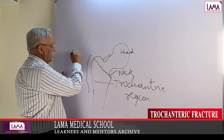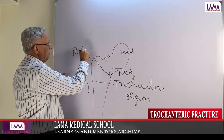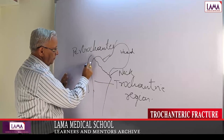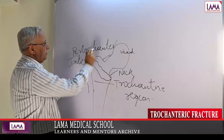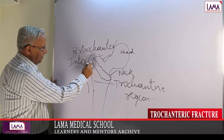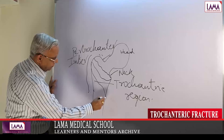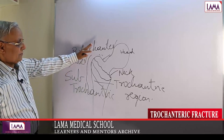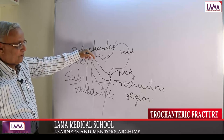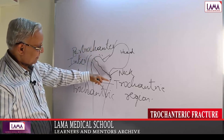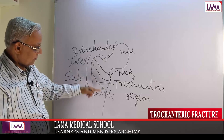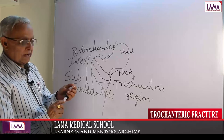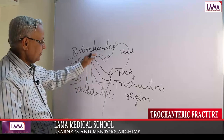Trochanteric fracture is divided into three parts. The first is pertrochanteric — only the trochanter is involved; the greater trochanter is involved and the lesser trochanter is not. Then there is the intertrochanteric fracture. The third fracture, which comes here and goes below, is called subtrochanteric. This is the basic classification of fractures of the trochanteric region.